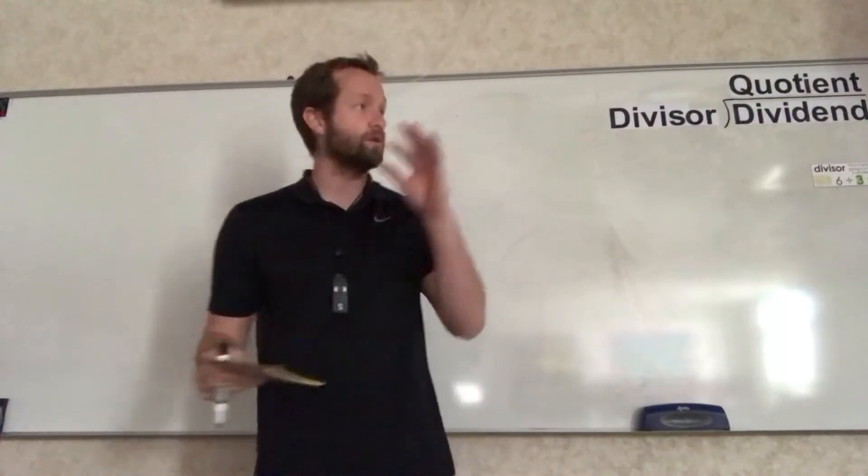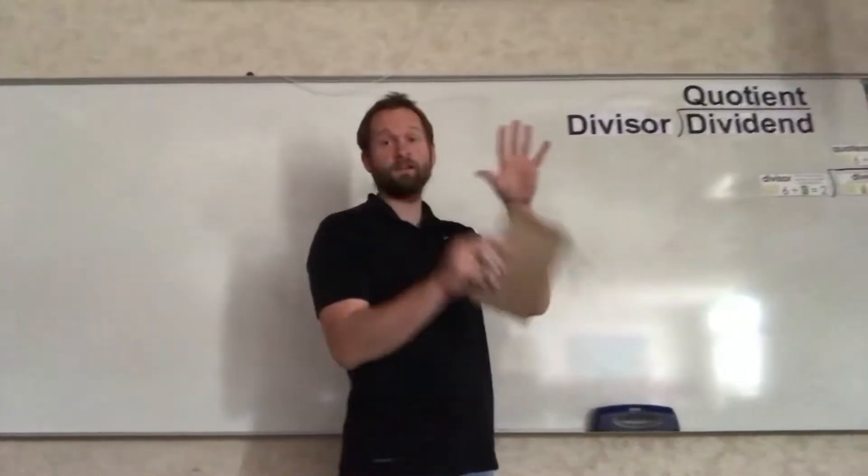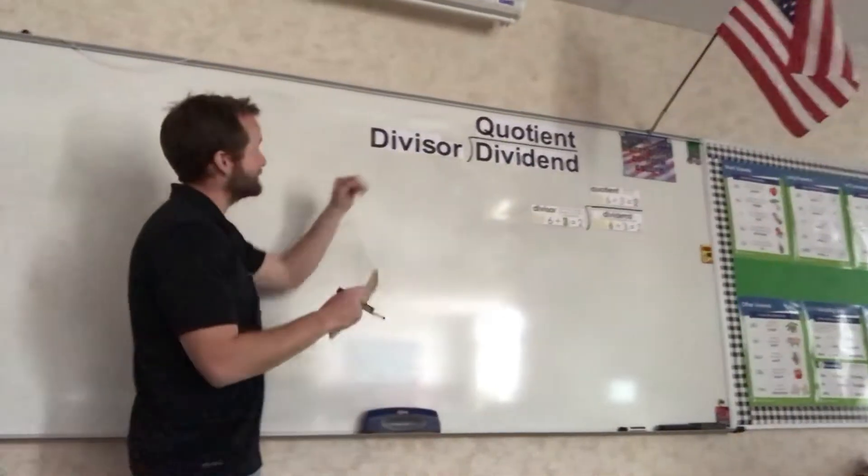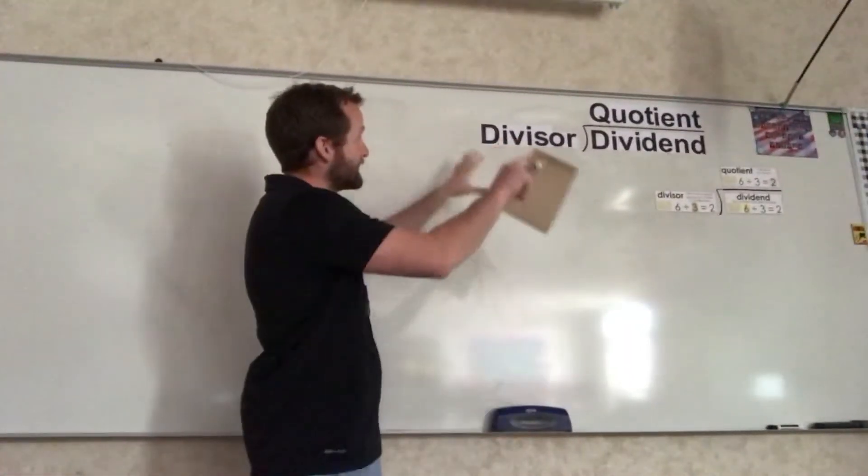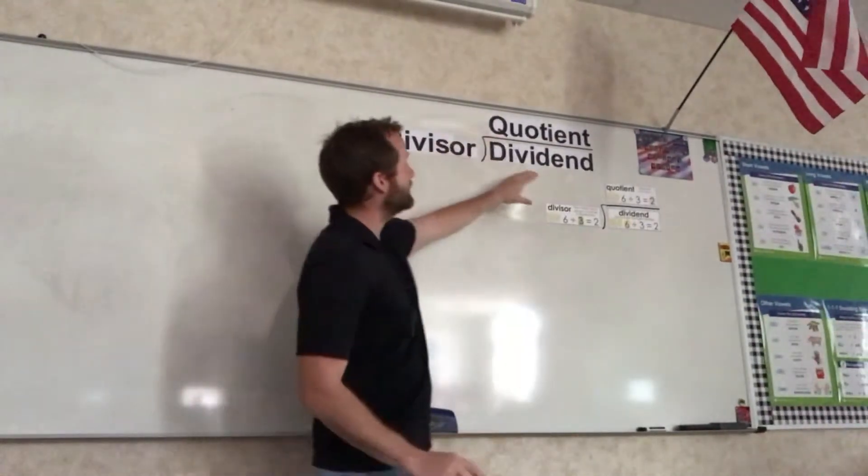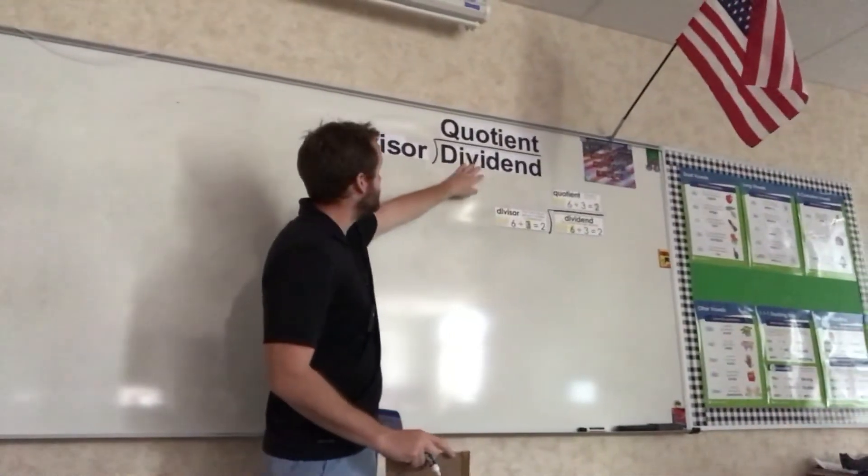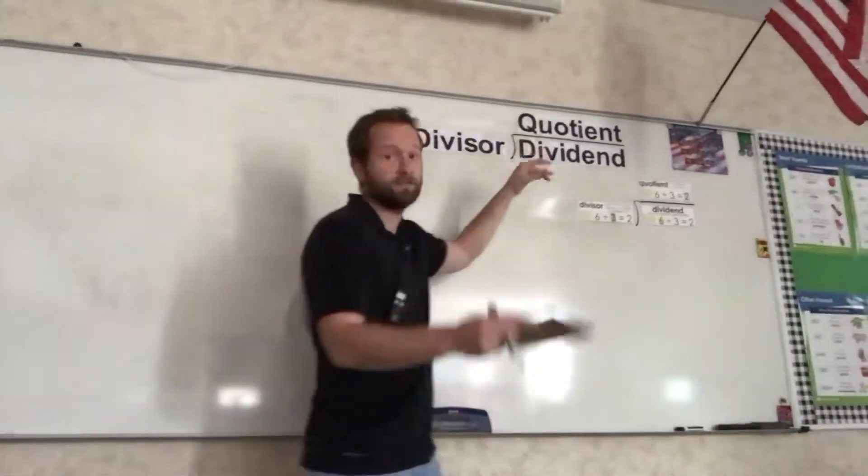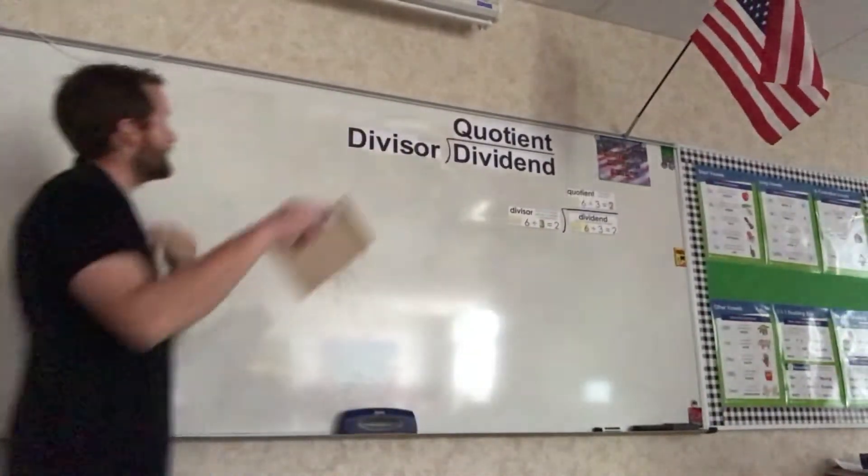And also like yesterday, we are still only having a decimal be in the dividend. When we set up a division problem, the dividend is always on the inside of our division bracket, the divisor is always on the outside, and the quotient, the answer, is just up there at the top.